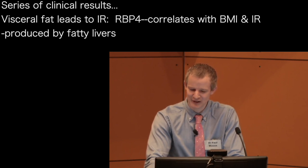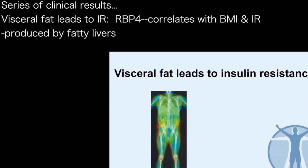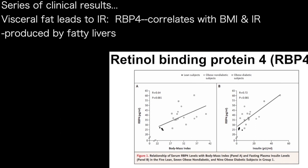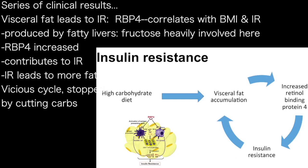I'm going to take you through some of the patient results we've seen in the clinic over the last few years. The first point is that visceral fat — fat in the liver — leads to insulin resistance. We've now started to figure out the pathways. This is retinol binding protein 4. You don't need to know the name, but it correlates very well with body mass index and insulin index, and it's been implicated as a causal mechanism of insulin resistance. It's produced by fatty livers — a high carbohydrate diet, and in particular fructose, leads to fat accumulation in the viscera and around the liver, which directly leads to an increase in retinol binding protein 4.